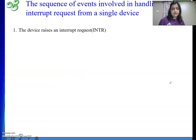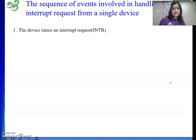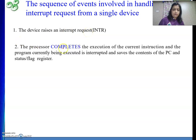Next, let's look at the sequence of events involved in handling an interrupt request coming from a single device. Right now we consider only one device placing one request and how we are going to handle it. First, the device raises an interrupt request — maybe for some input or output — and the processor completes execution of the current instruction.